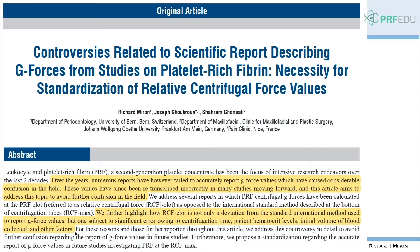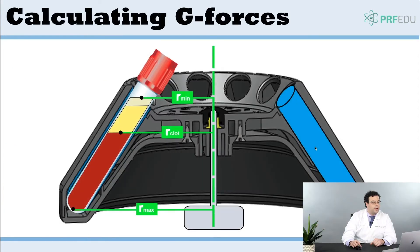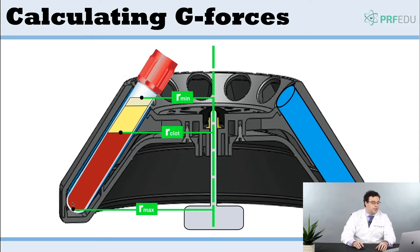The article further highlights how RCF clot is not only a deviation from the standard international method used to report g-force values, but is subject to significant error owing to centrifugation time, patient hematocrit levels, initial volume of blood collected, and other factors. There have been different ways to report g-forces: at the RCF min (top of the tube), the RCF clot, or the RCF max (bottom of the tube). Internationally, people typically report at the RCF max, but many have been reporting at the RCF clot.